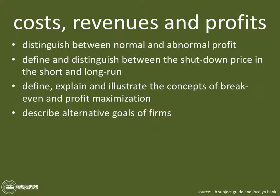Can you describe alternative goals of firms? This brings up my least favorite economic term in the whole two-year course: satisficing — which is just when firms do just enough to make themselves happy. They're not necessarily profit maximizing. Maybe they're revenue or growth maximizing, or maybe they care about the environment. Maybe they have corporate social responsibility norms — like Patagonia, one of the best firms on the planet for taking care of the planet. Those are other goals beyond just profit maximization.